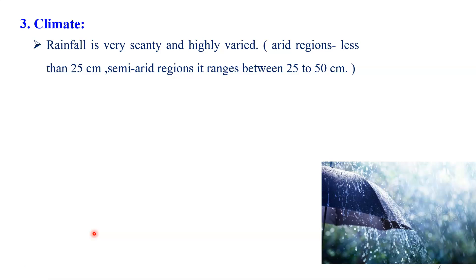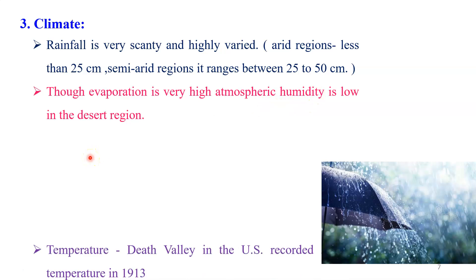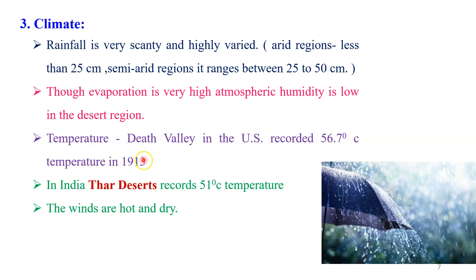If you see the climatic conditions, rainfall is very less and highly varied from place to place. In the arid region, we have rainfall less than 25 cm, whereas in the semi-arid region it ranges between 25 to 50 cm only. Evaporation is very high and atmospheric humidity is also low. Regarding temperature, the highest recorded temperature was in 1913 at Death Valley, USA — 56.7 degrees Celsius. In India, in the Thar Desert, we have recorded temperature of about 51 degrees Celsius. Winds are very hot and dry in the desert region.